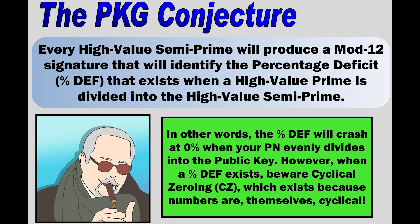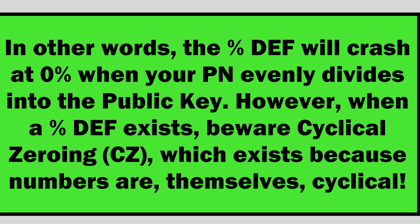This is the PKG conjecture. It states that every high-value semi-prime will produce a mod 12 signature that will identify the percentage deficit that exists when a high-value prime is divided into the high-value semi-prime. In other words, the percentage deficit will crash at 0% when your prime number evenly divides into the public key.